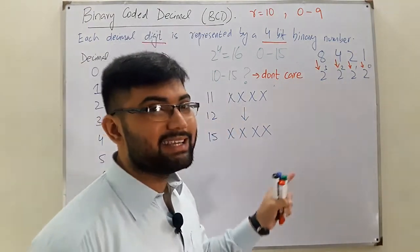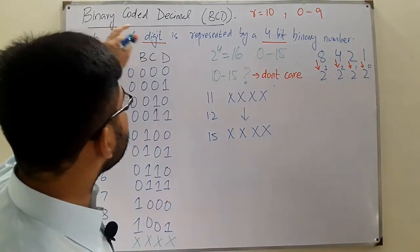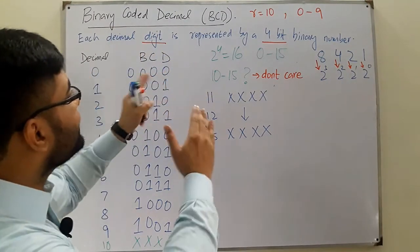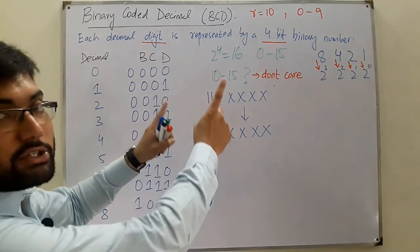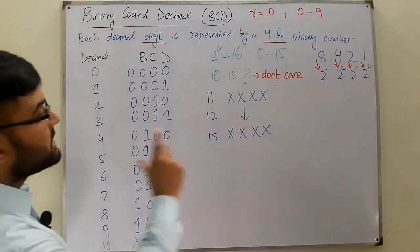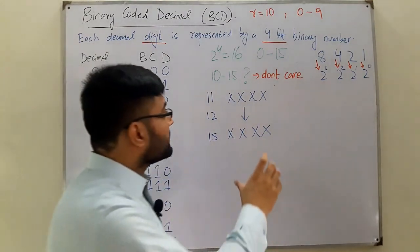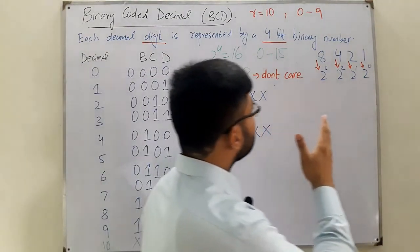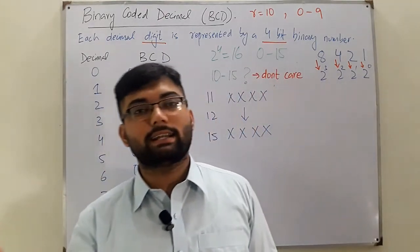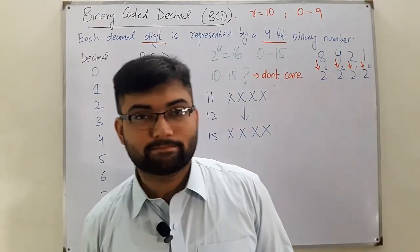That's all about the introduction to Binary Coded Decimal. What we said was that each decimal digit from 0 to 9 can be represented by an equivalent four-bit binary number. See you in the next lecture very soon, inshallah. Till then, take care. Goodbye.